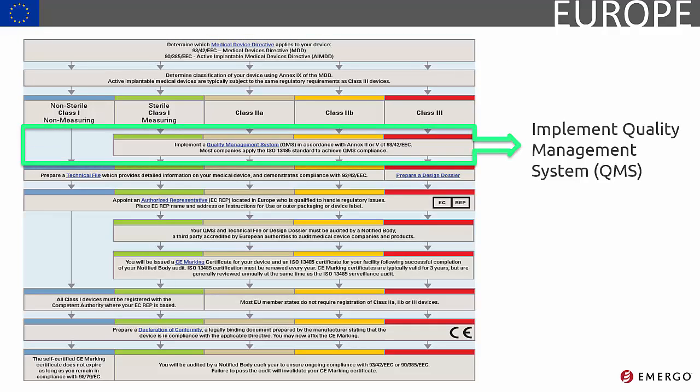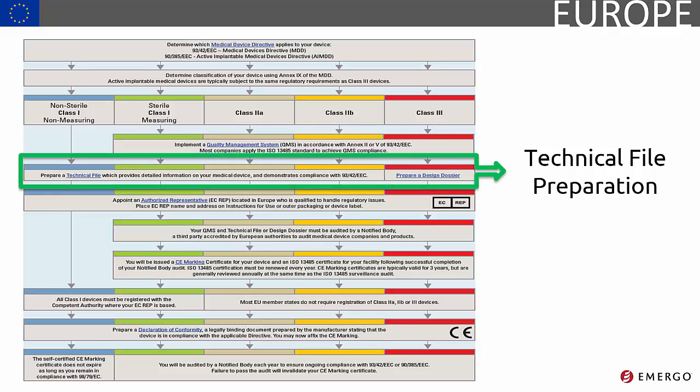If you don't already have a quality management system in place, you'll need to get one. This can take about six months or longer. Most companies apply the ISO 13485 standard to achieve QMS compliance. Next, you'll prepare a technical file — a dossier which details information about your product and provides proof of compliance with applicable requirements.